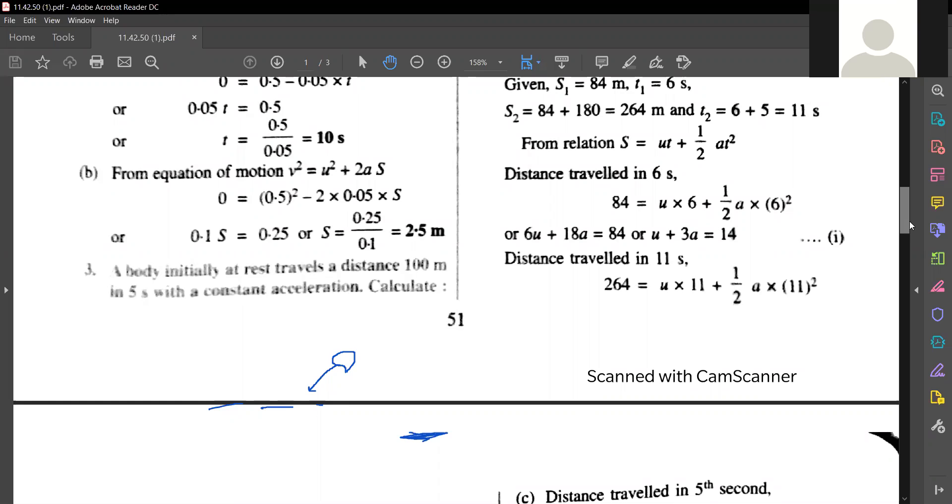It says, the initial velocity is at rest initially, u equals to 0. Write down u equals to 0, s equals to 100 meters, time equals to 5 seconds.